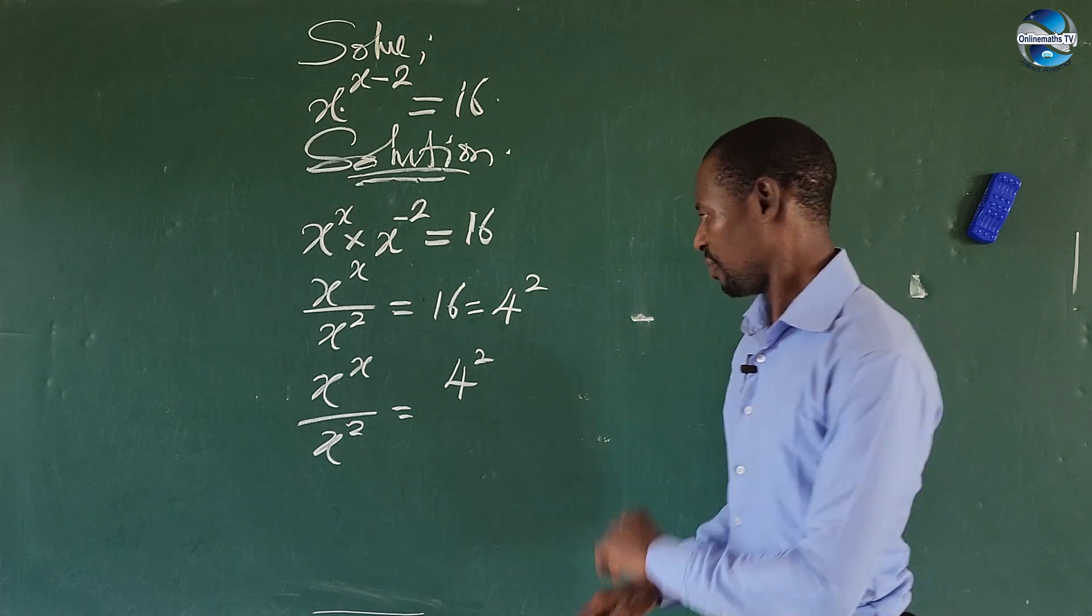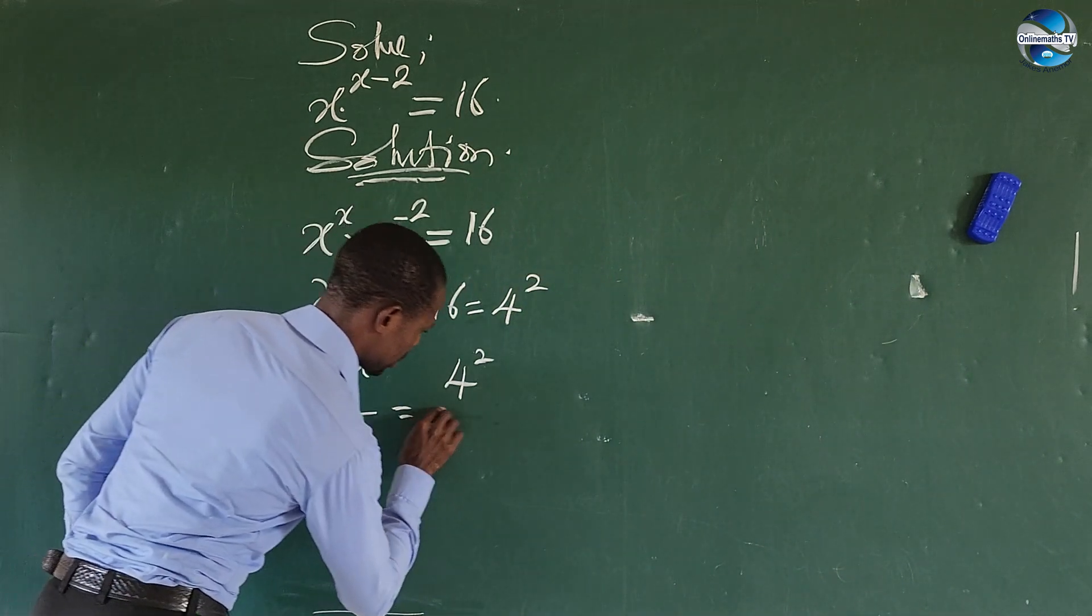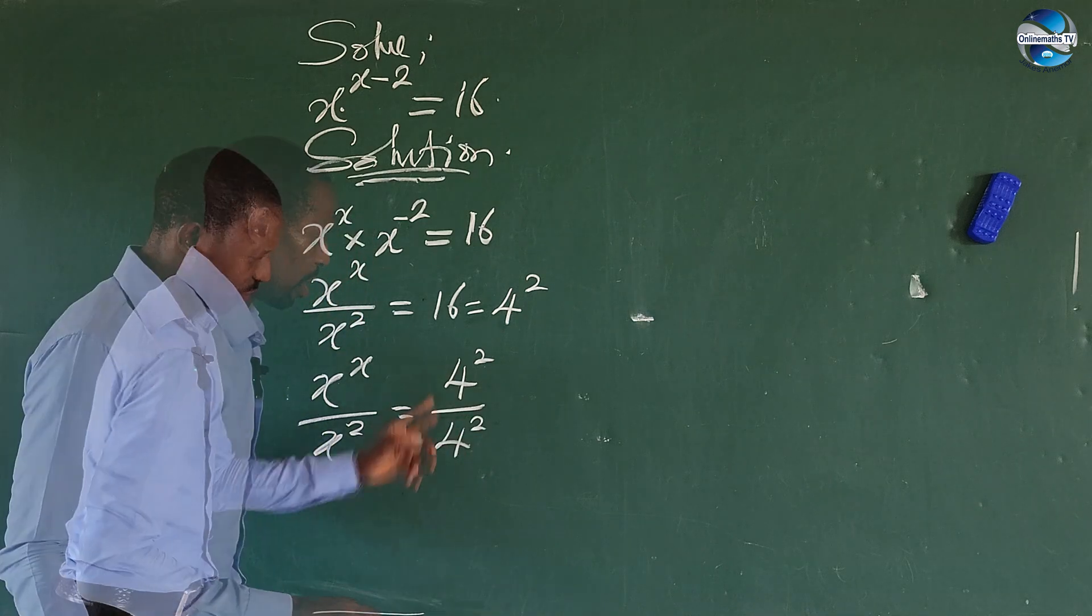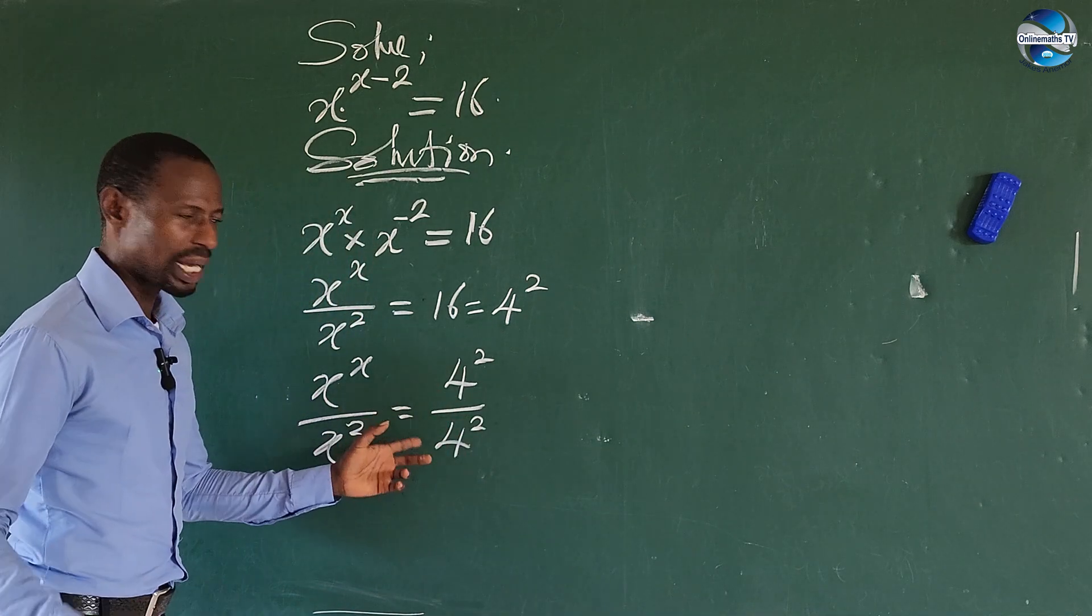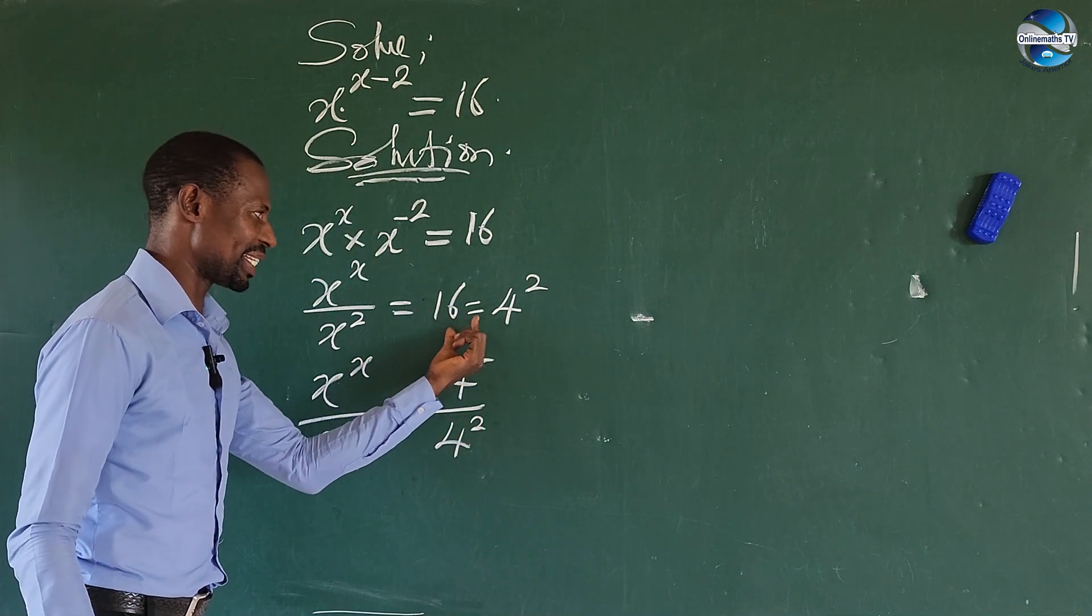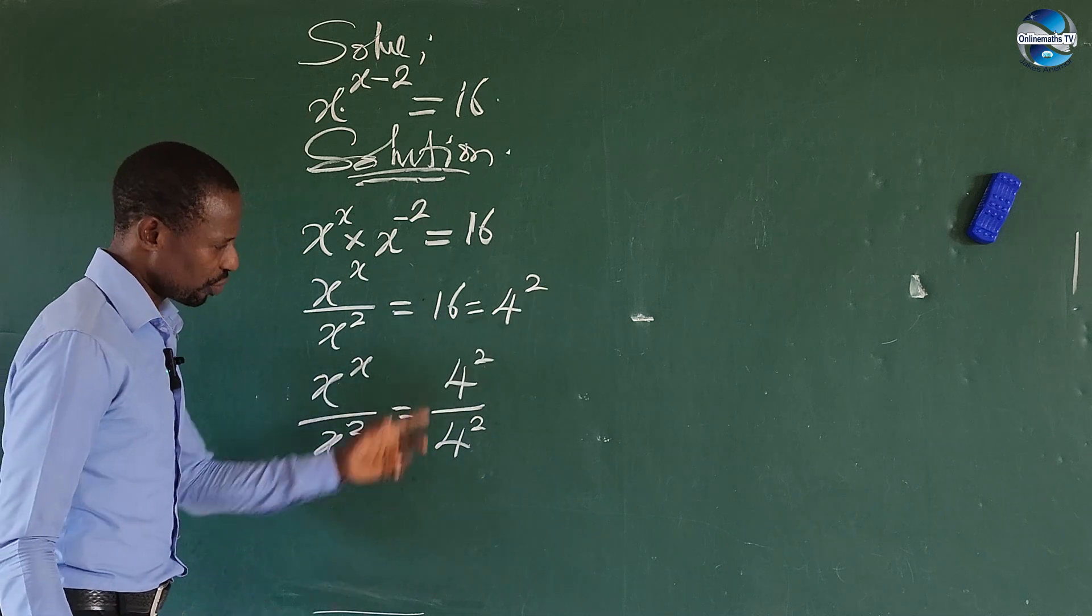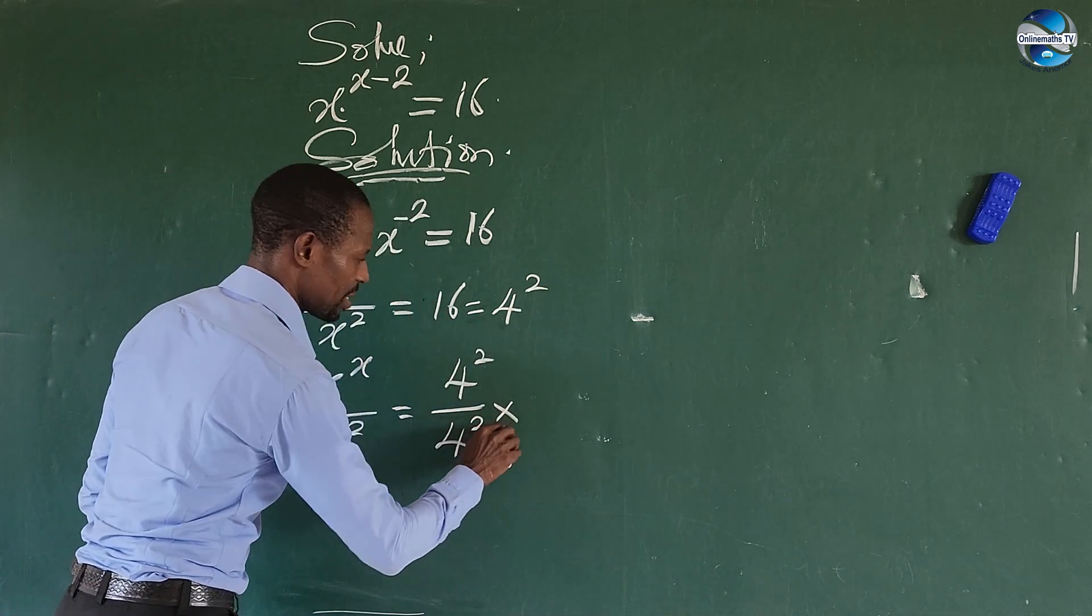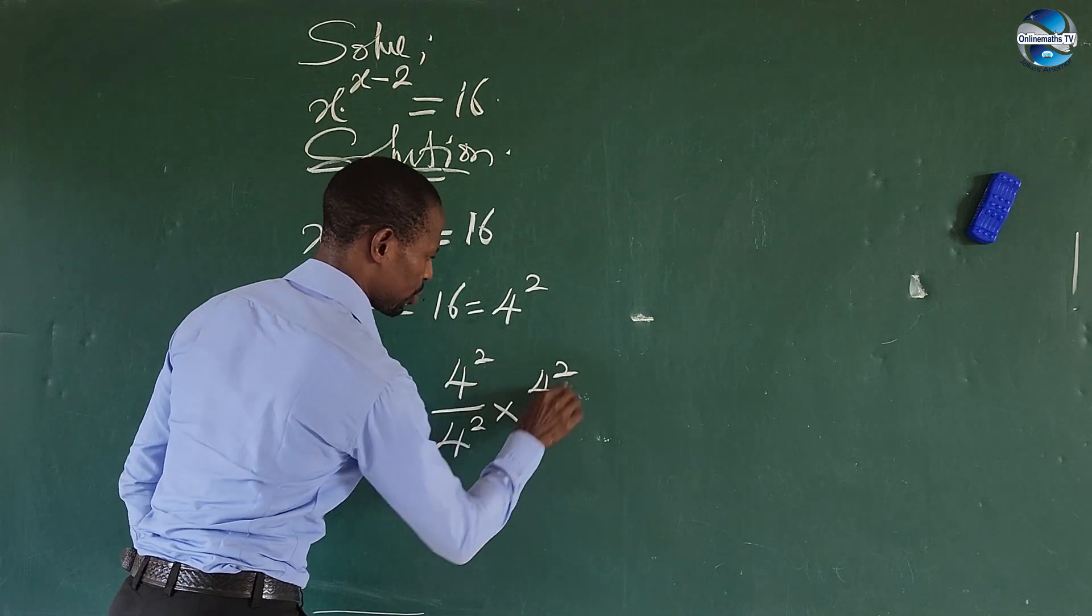So if we decide to put this all over 4 to the power of 2, automatically this will give us 1, and what we have here is 16 or 4 to the power of 2. So for us to go back to this expression we have here, let's multiply this by 4 to the power of 2, this is all over 1.